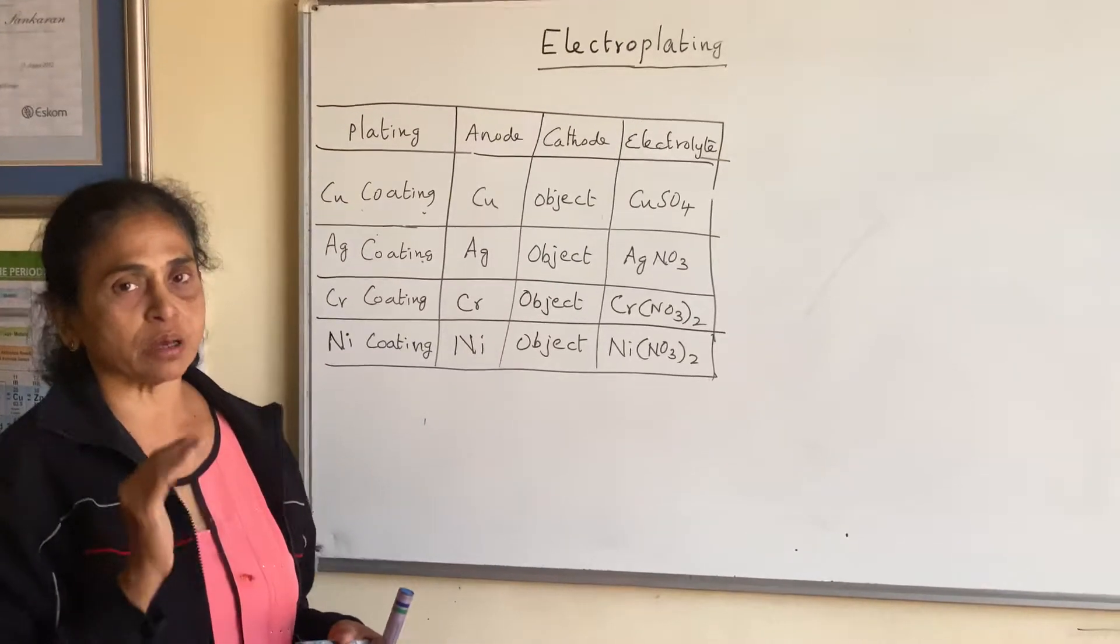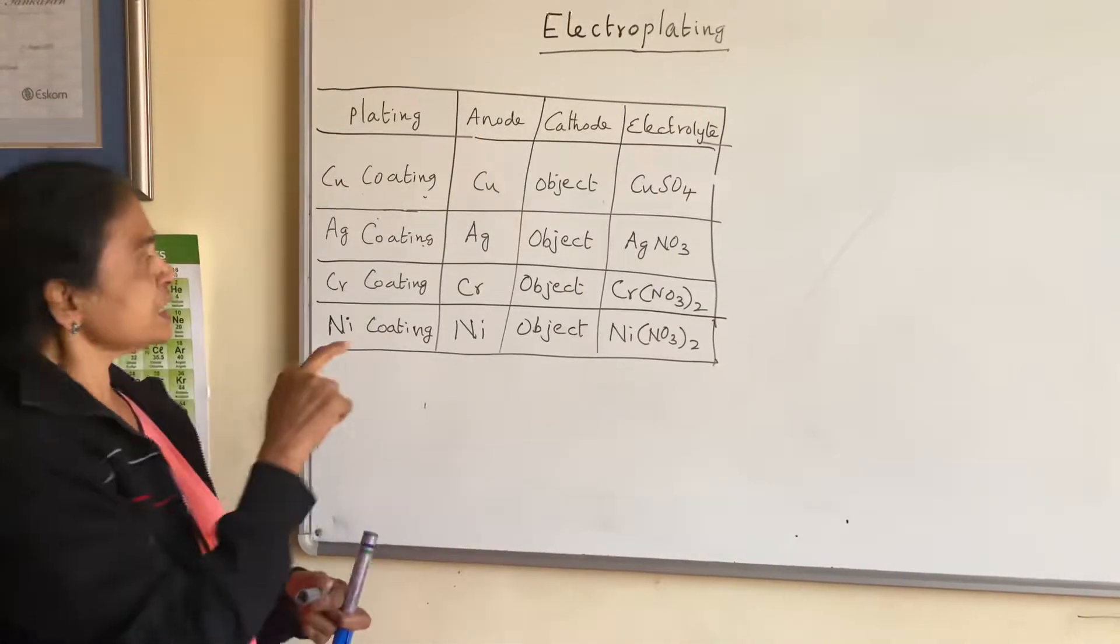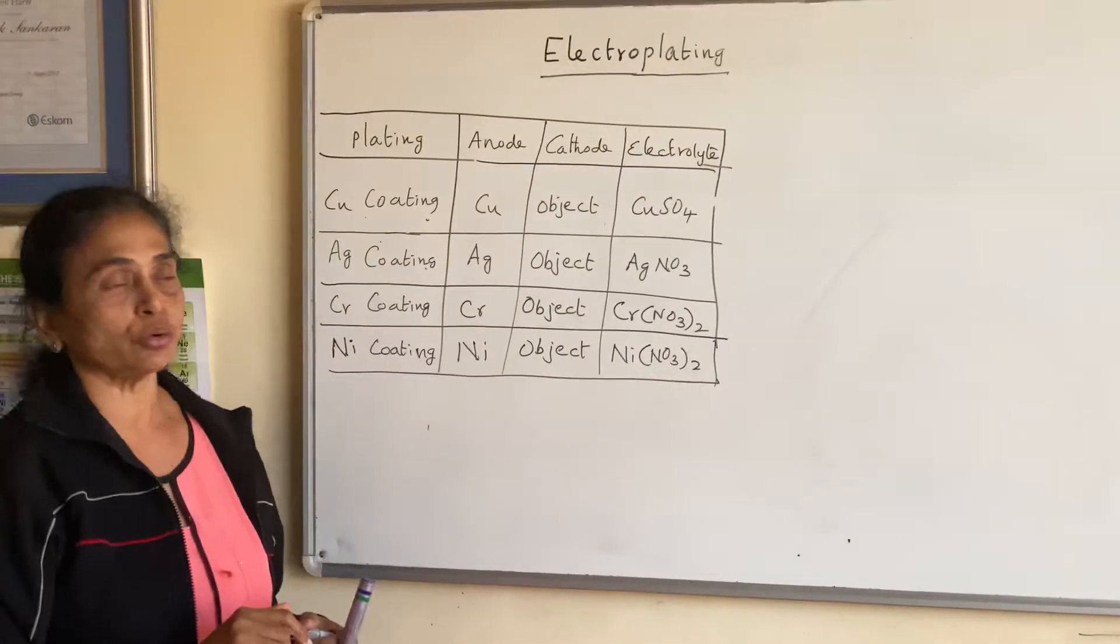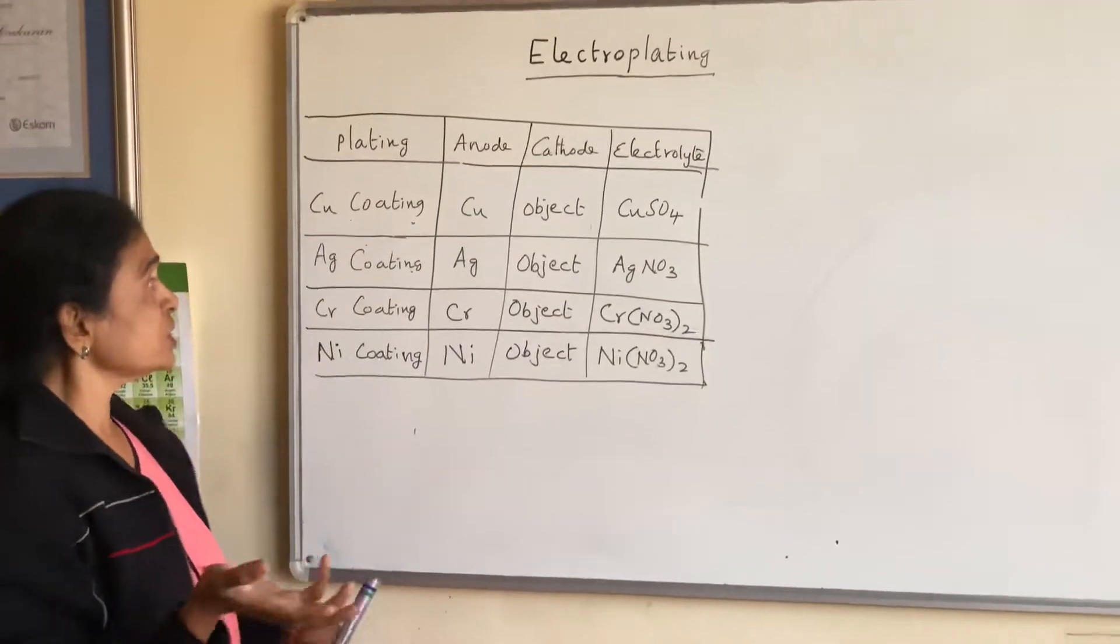For example, car bumpers are coated with chromium and even the taps in the bathroom are coated with chromium. And sometimes you can see nails coated with copper to prevent rusting.